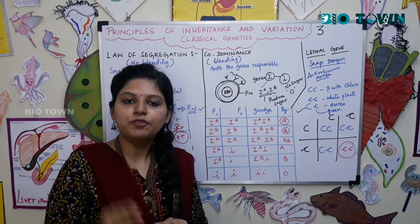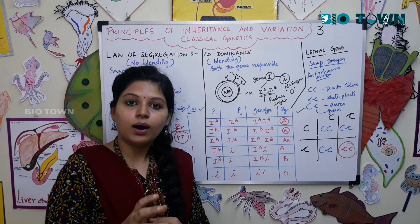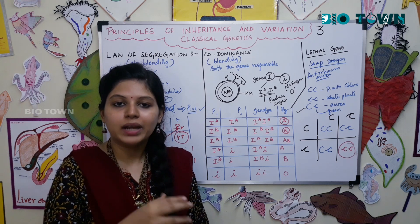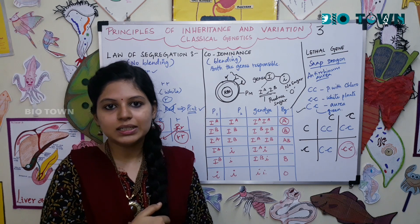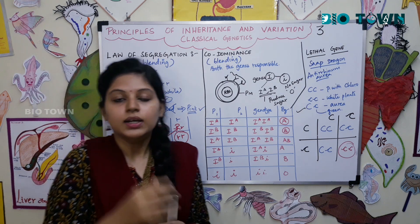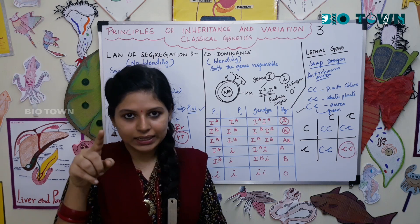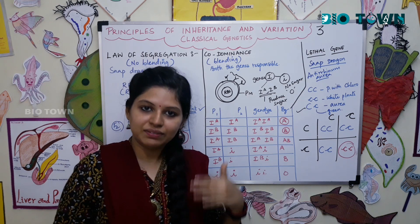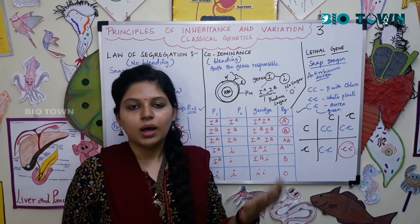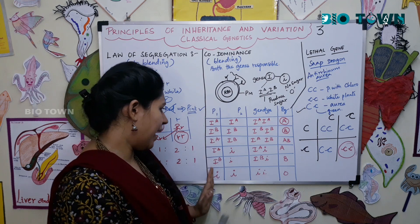Humans have red blood corpuscles (RBCs), and the outer membrane — the plasma membrane — of these RBCs has genes that encode for blood groups. You have the capital I gene, which codes for blood group A and blood group B, and the small i gene, which codes for blood group O. To be more precise, the capital I gene produces sugar polymers, whereas small i does not produce sugar polymers.